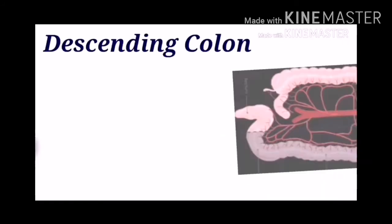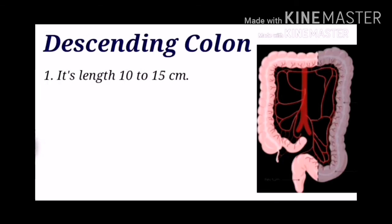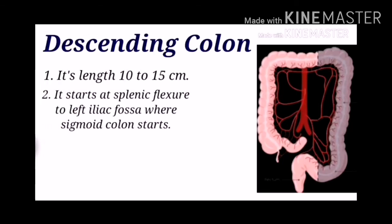The fourth part of the colon is the descending colon. Its length is about 10 to 15 centimeters. It starts from the splenic flexure at the left hypochondria to the left iliac fossa, where the sigmoid colon starts.